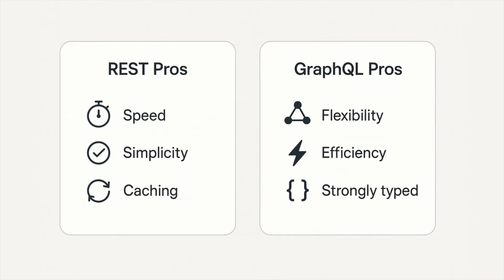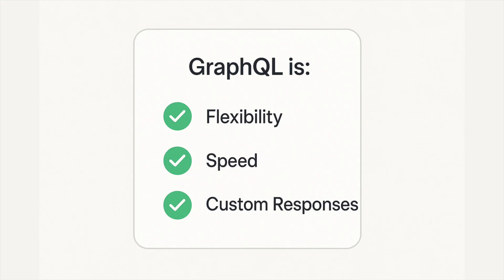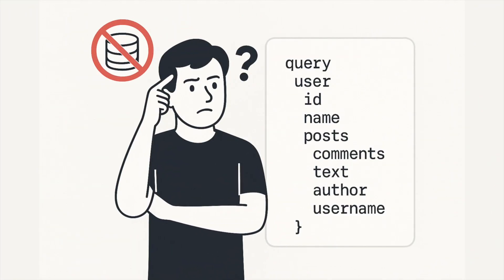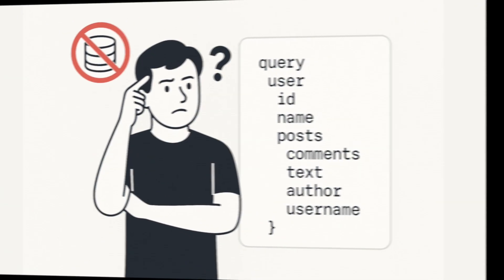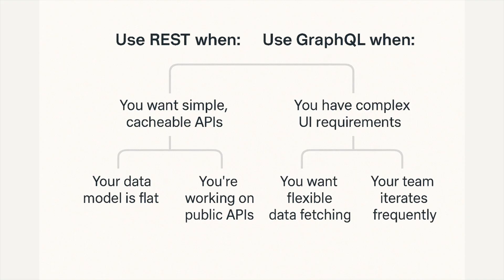So, is GraphQL always better? Not quite. REST is easy to cache using HTTP, simple for standard CRUD, and great with browser-based tools like Postman. GraphQL is flexible and powerful, reduces overfetching, and is ideal for fast-moving frontends. But GraphQL doesn't support traditional caching easily, and writing complex queries can be tricky for beginners. Use REST when you want simple cacheable APIs, your data model is flat, or you're working on public APIs. Use GraphQL when you have complex UI requirements, want flexible data fetching, or your team iterates frequently.